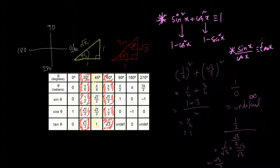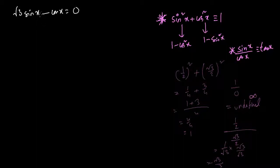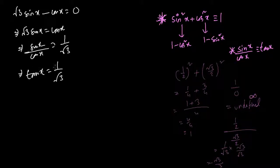One of the most common exam question types involves using identities to solve equations. For example: √3 sin(x) − cos(x) = 0. Since there is no squared term, the fundamental identity sin²x + cos²x = 1 cannot be used. Instead, rearrange to √3 sin(x) = cos(x), then divide: sin(x)/cos(x) = 1/√3, so tan(x) = 1/√3, and this can then be solved.